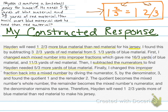And I even explained all the steps: dividing the numerator. I need to spell dividing right — I'd have to go back and fix that. Dividing the numerator 5 by the denominator 3, and found a quotient of 1 and the remainder 2. I even explained the quotient becomes the whole number, the remainder becomes the numerator, and the denominator remains the same. Did I have a conclusion sentence? Yes. Therefore, Hayden will need 1 and ⅔ more blue material than red material.